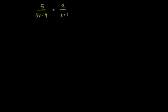Your first reaction might be: I've never seen this before. I have x's in the denominators. How do I actually solve this equation? The easiest way to proceed — and there are other ways to do this — is to try to multiply both sides of this equation by expressions that will get rid of these x's in the denominator.